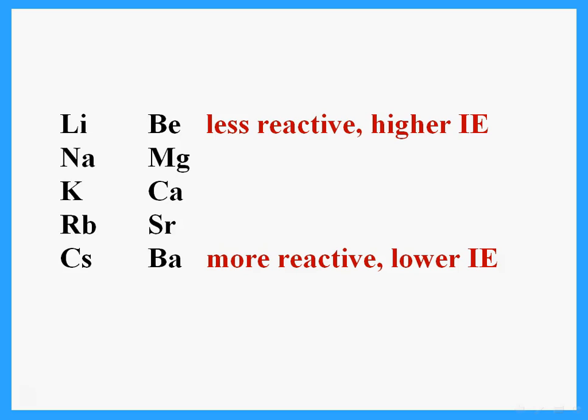First of all, remember from A-level that Group 1 and Group 2 reactivity increases going down the group. In Group 1 the most reactive metal is cesium. Ionization energy is the energy needed to remove the outermost electron. As we go down the group, the element becomes bigger with more shells, so the outermost electron is further from the nucleus — less attraction — so ionization energy is lower.